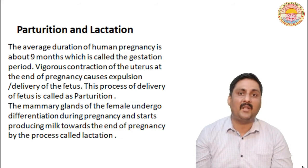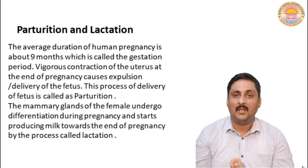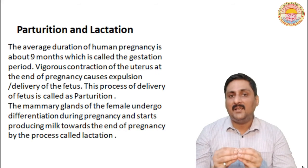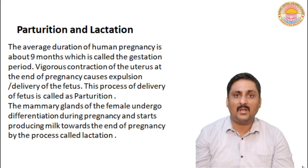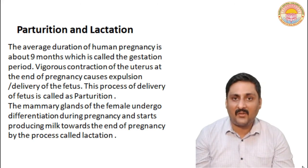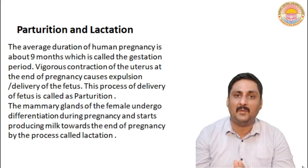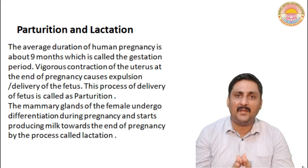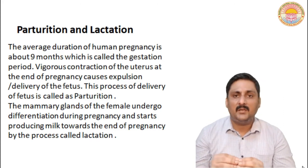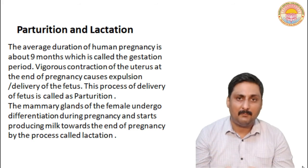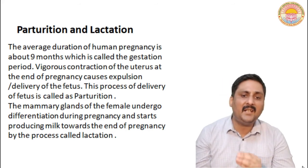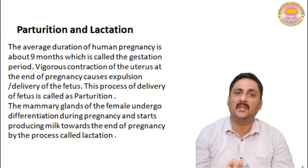Because of this mild contraction, oxytocin hormone is released. The concentration of oxytocin hormone increases as the uterus further contracts, leading to stronger and stronger contractions. More vigorous uterine contraction ultimately leads to expulsion of the developed fetus. During the development of the embryo inside the womb, there is differentiation in the mammary gland, which starts to produce milk at the end of pregnancy — this process is called lactation.